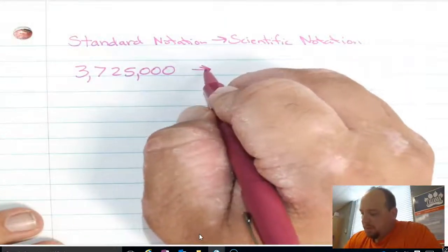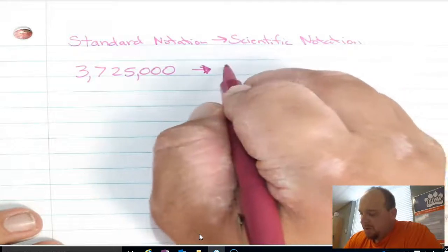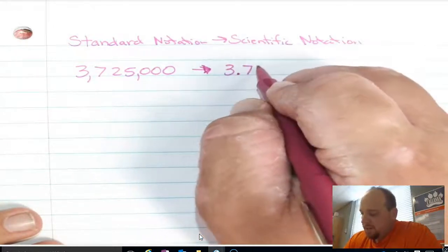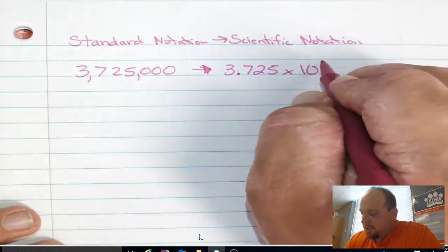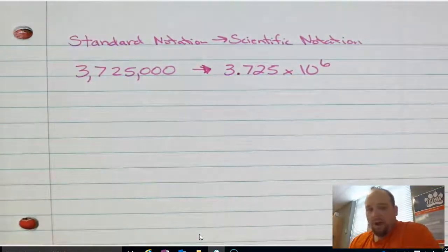So we're going to write this with a factor that's between 1 and 10. So in this case, in this problem, it's going to be 3.725. And we're going to multiply by a power of 10. And in this one, we're going to multiply by a power of 6.